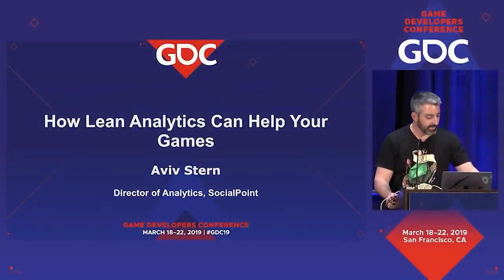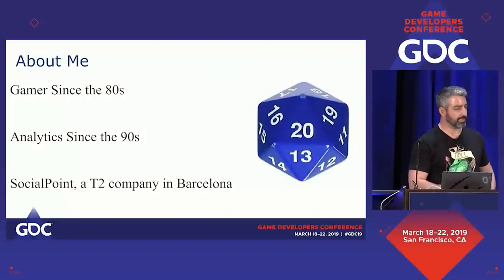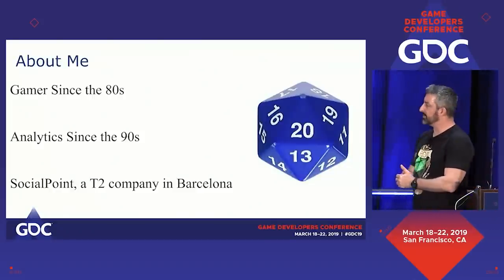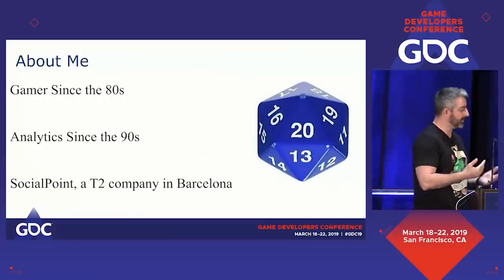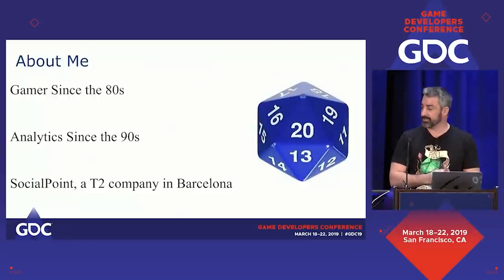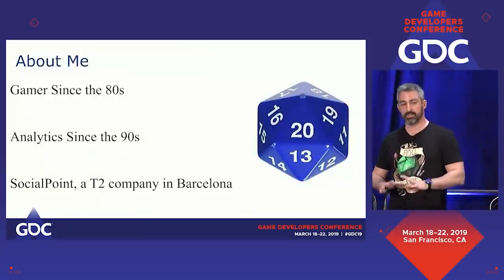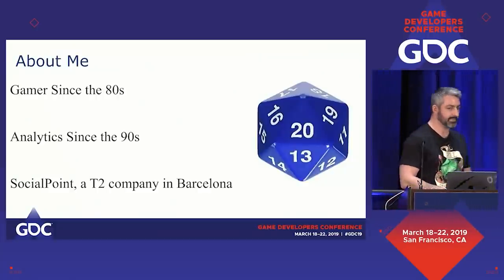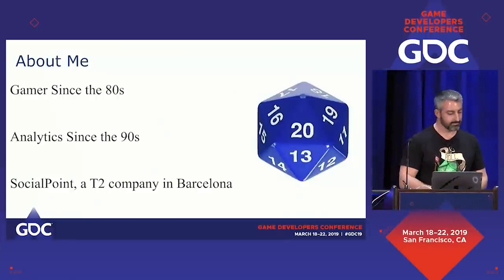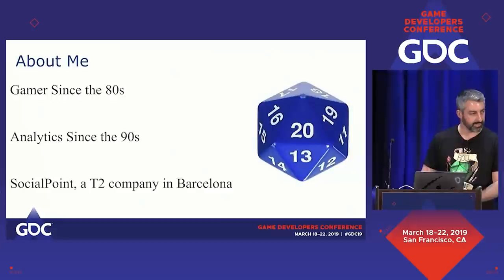My name is Aviv Stern, and I'm the director of analytics at Social Points. I've been a gamer since the 80s — I started with D&D, the gateway game, and then matured into XCOM. Unlike today, where I still play D&D and XCOM. I've been doing analytics since the 90s — we called it business intelligence, data science, data mining. At its core, it's always about the same thing: trying to answer questions and find insights to help the business. I'm currently doing that at Social Point, a Take Two company in Barcelona.